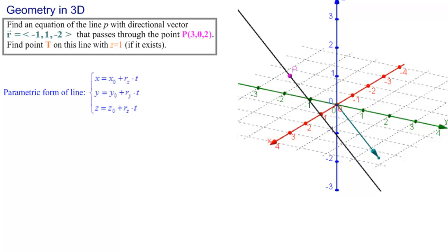So what would we have? We would have P equals, and we have x equals, y equals, and z equals.